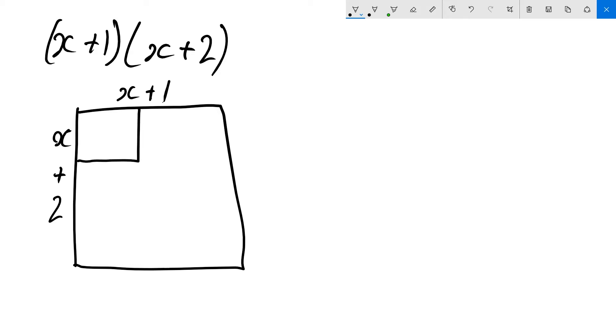So what ends up happening is if we calculate the area, we're going to get x squared here. Then we'll have 1 times x here, so that's just x, and then we'll have x times 2, that's 2x, and then we're going to have 2 times 1 which is 2. Then I can rewrite it as x squared plus, and we'll sum these together, so 2x plus 1x equals 3x, and then our constant here plus 2. And you can see how we've just expanded using area, something more familiar.